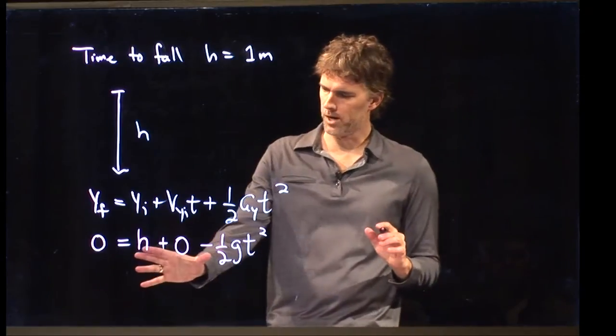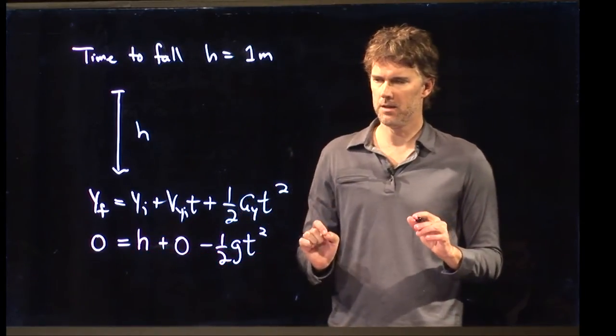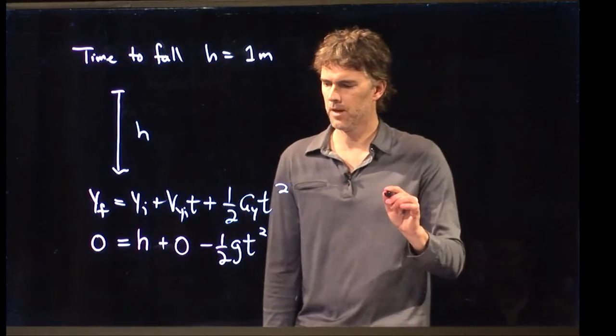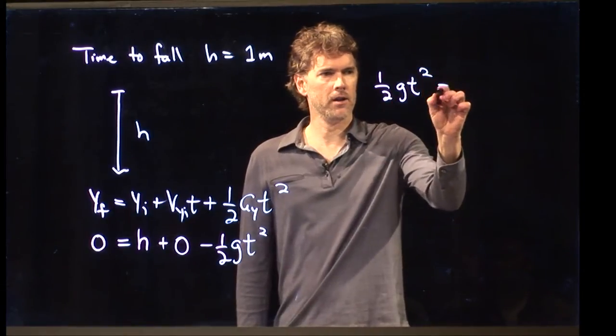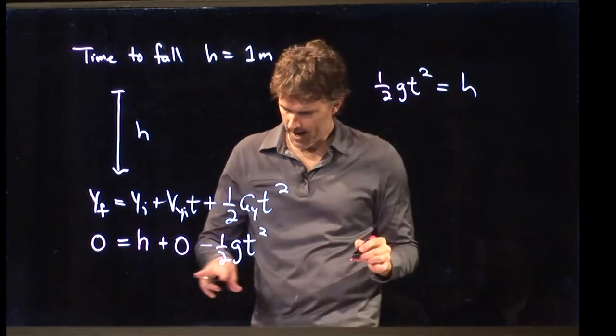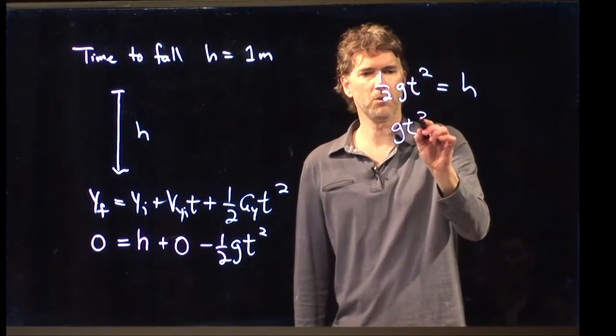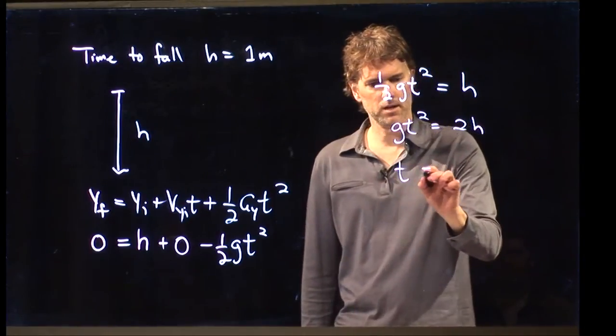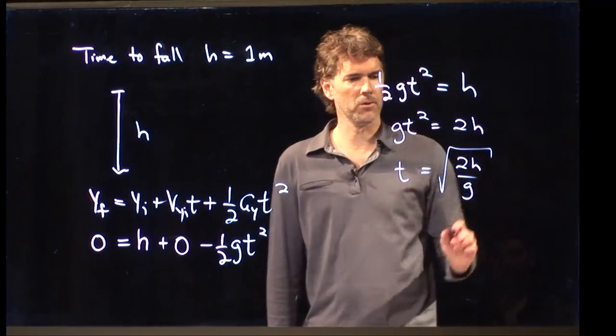And now look. We have one equation and the only unknown in there is t. And so we can solve this very quickly for t. I get one half gt squared equals h. I just move that over to the other side. And now I multiply by 2. So I get gt squared equals 2h. And then I divide by g. I get t squared equals 2h over g. And I take the square root.